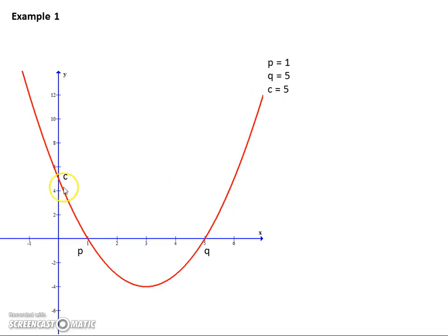Okay, in this case we've got c, we've got p and we've got q because there's our intercepts at one and five and there's our y-intercept at five. So what we do is we pick the best equation, the one with p and q in it.